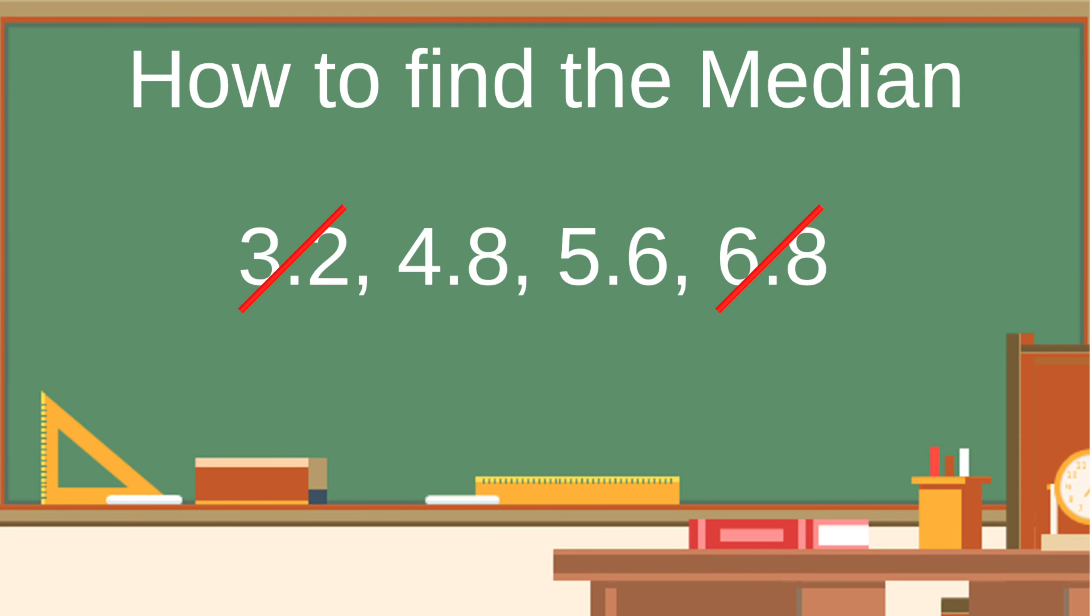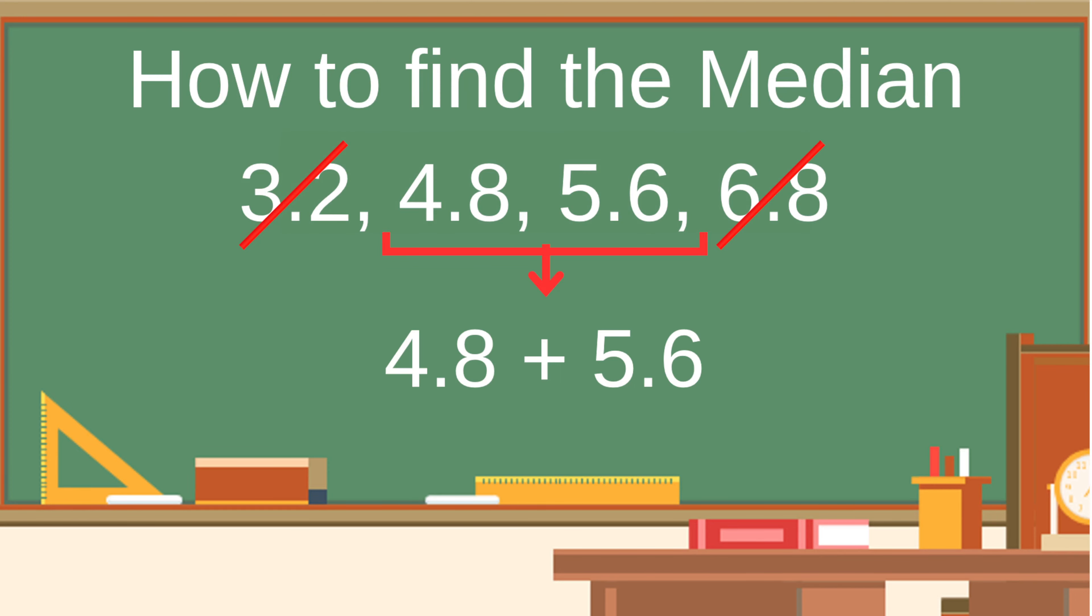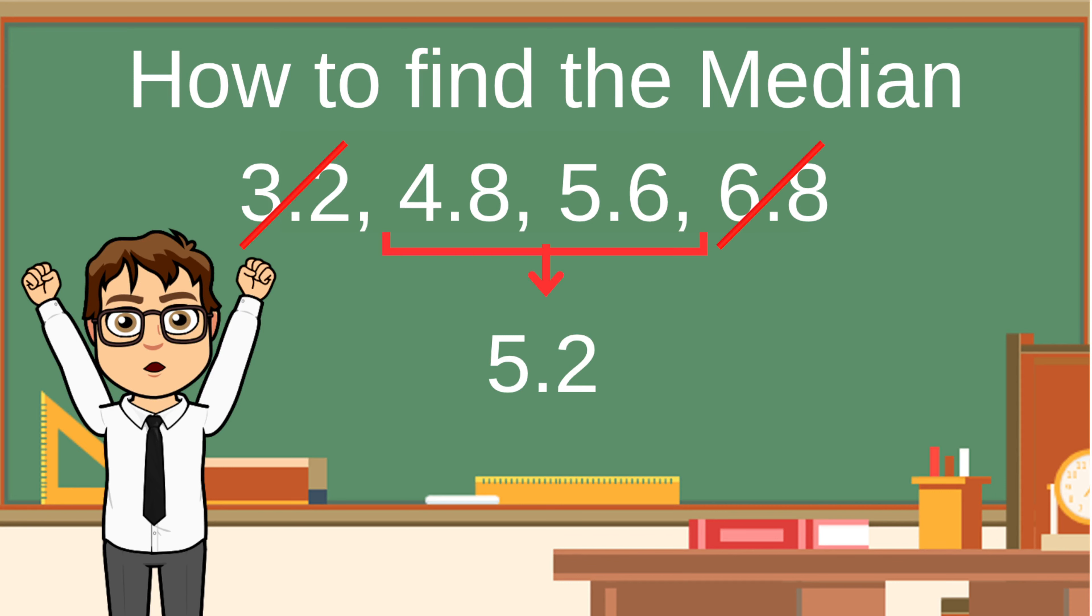Otherwise, there would be no median. This is a special case. Whenever you're left with two numbers in the middle, what you go ahead and do is take the two remaining numbers in the middle and add them together. Then, once you've added them, divide that number by two. Presto! That will give you the median.